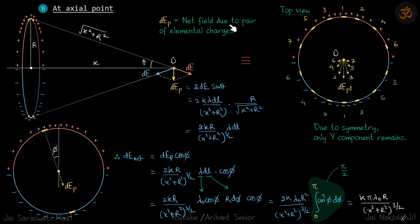DEP is the net field due to pair of elemental charges. DEP is because of both of these elemental charges, not just one. Our DEP is because of both and it is vertically downwards. Its value will be 2DE sin theta. Vertical components will be added up for both of them. That should be 2DE sin theta. Now DE, if we consider this distance, is 2K DQ, which is λDL by R squared times sin theta. Sin theta will be R upon root of x squared plus R squared, which gives this value.